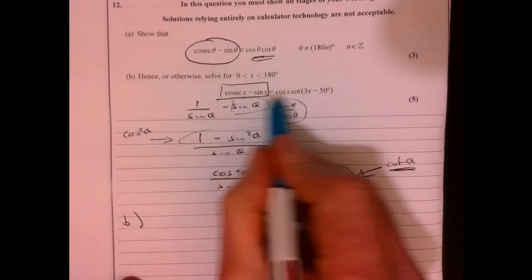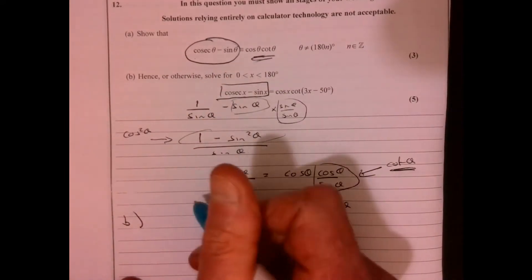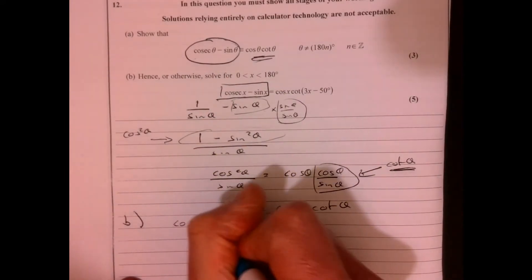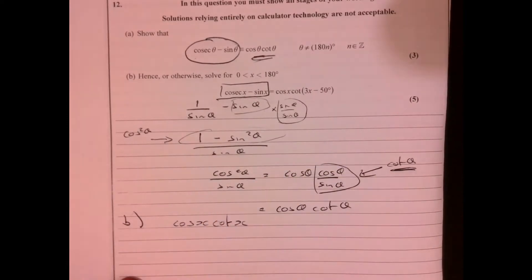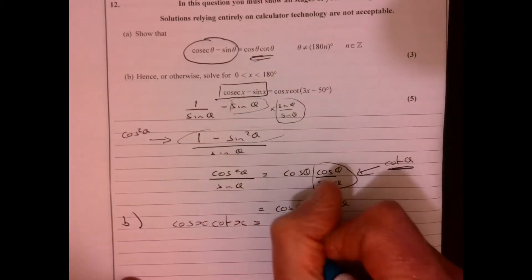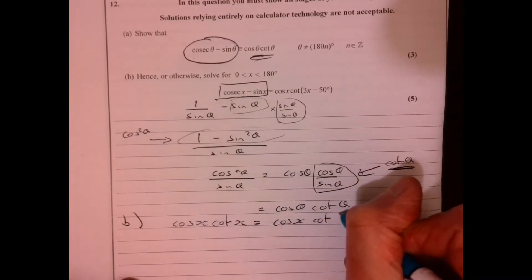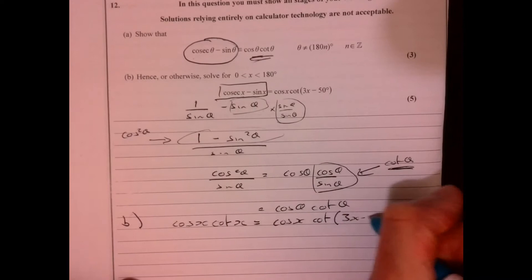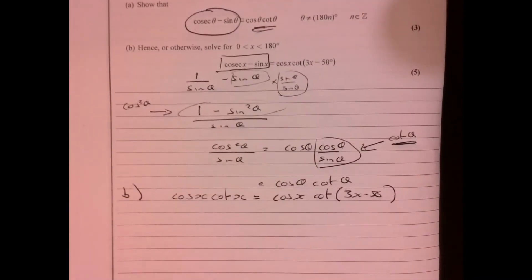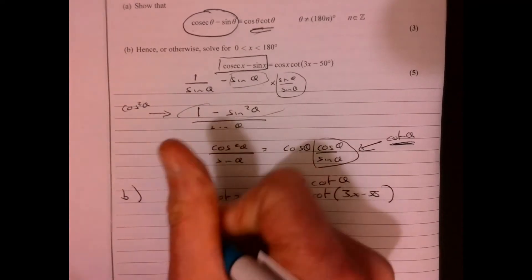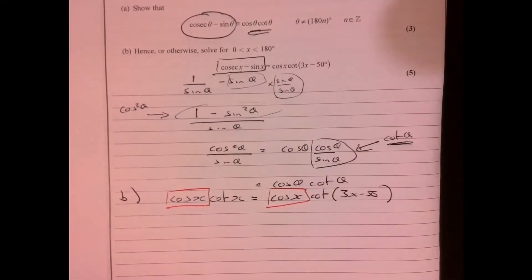So remember, when you're always a little bit stuck and you're looking at something like this, why have they told me this? So we can write. So what have we got? We've got cos x and we've got cot x equal to cos x and cot and then 3x minus 50. Now, be careful of the next step, because obviously it looks like what we can actually do is we can divide both sides by cos x.